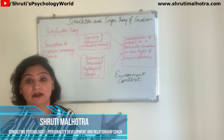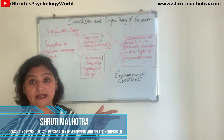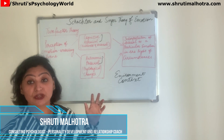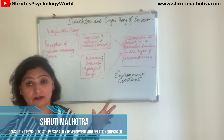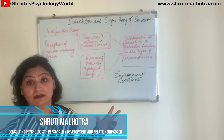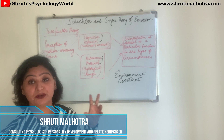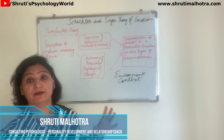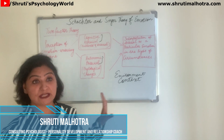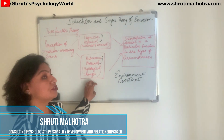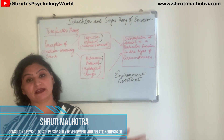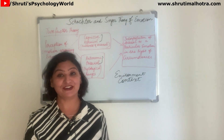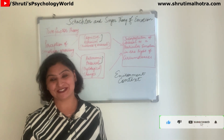So this is Schachter and Singer's theory of emotion — the role of reasoning, the role of environment, the role of context. Cognition, cognitive appraisal, that is cognitive interpretation — its role is central in their theory. At the same time, physiological changes are also present. So this is Schachter and Singer's theory of emotions.